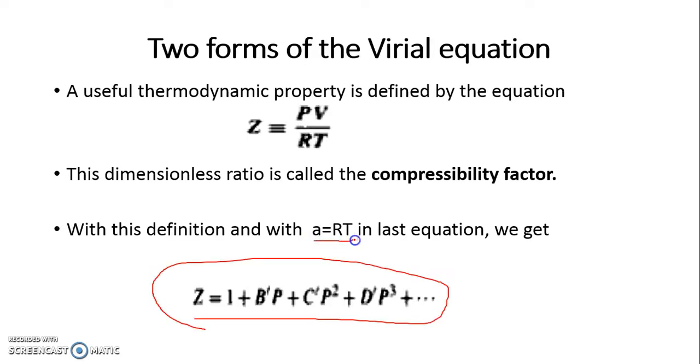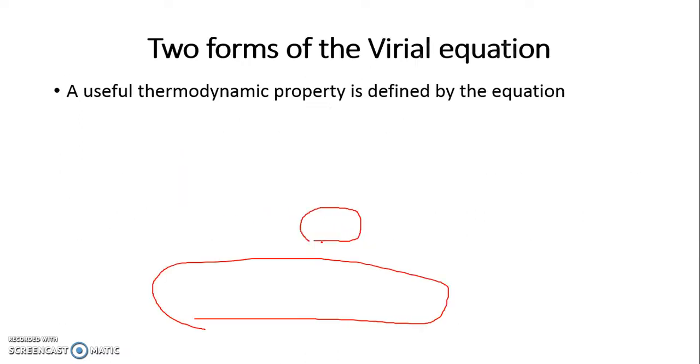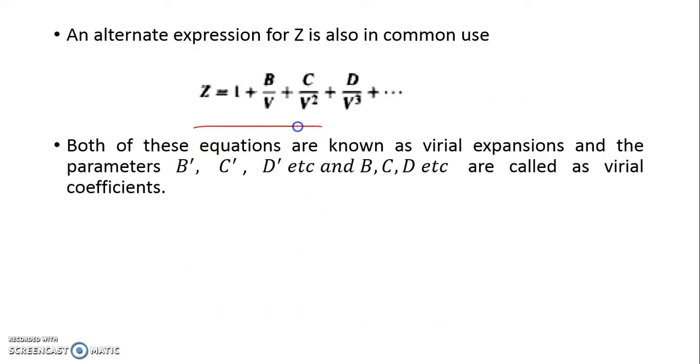We also have seen how a can be clubbed to RT with this expansion series. By substituting a equal to RT, we get left hand side as z, proportionally z equals 1 plus b dash p. We have another form z equals 1 plus b by v plus c upon v square plus d upon v cube.